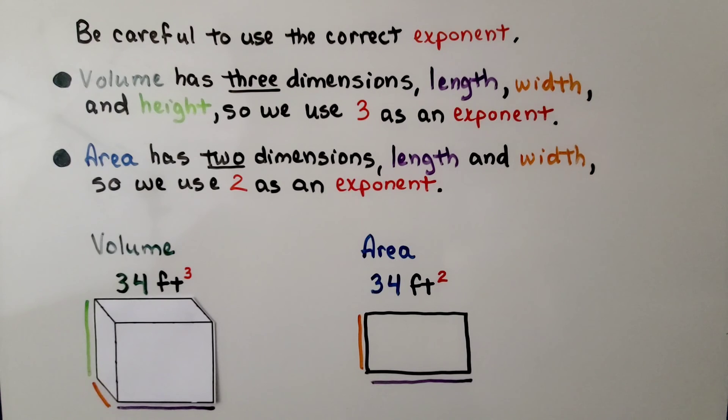Now, be careful to use the correct exponent. Volume has three dimensions, length, width, and height, so we use three as an exponent.